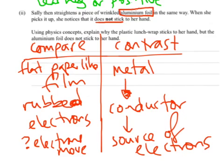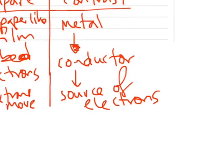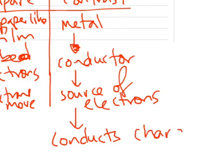So wrapping it up, no pun intended, the aluminium foil doesn't get charged in the same way, because it conducts any charge imbalance quickly away. So let's just write that down so it's there, conducts charge imbalance away.